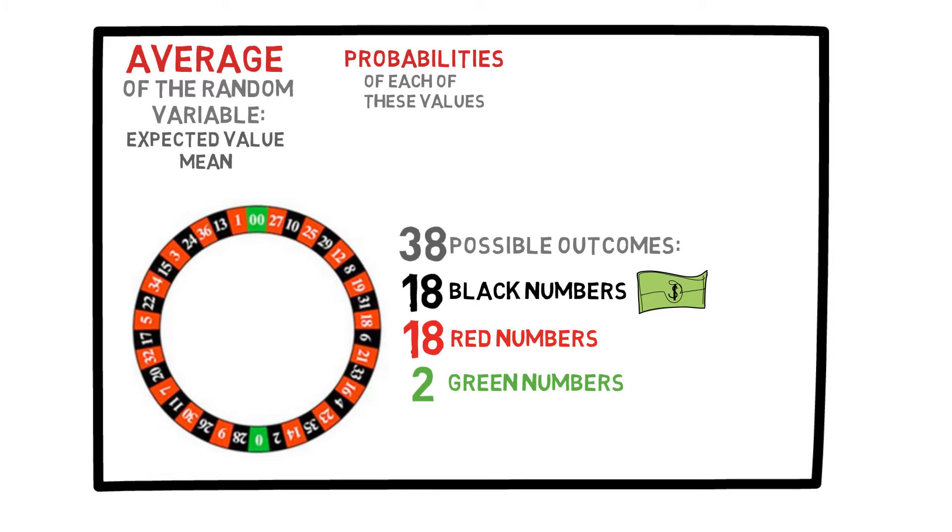In this case, if you win, you get $1, so x equals 1. If you lose, the value of x is minus 1 because you have lost your original $1. Now, we need to look at the probabilities of each of these values.